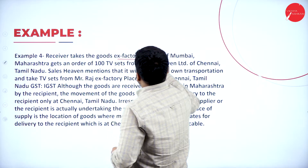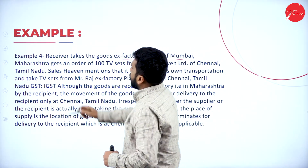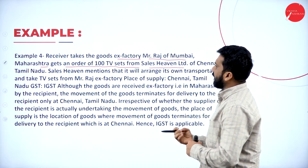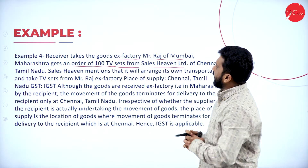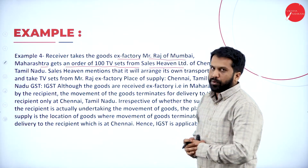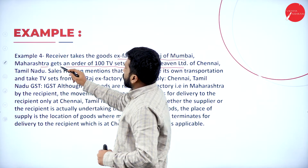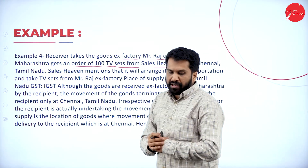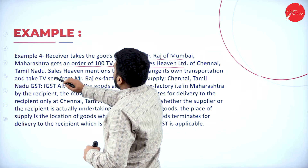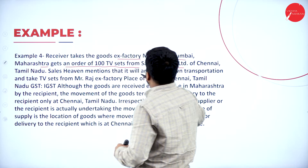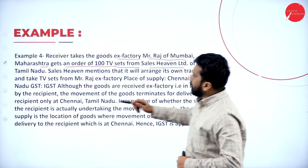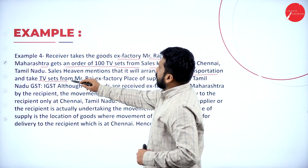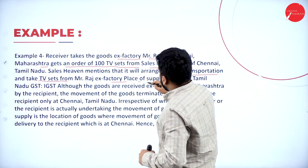Receiver takes the goods ex-factory. Mr. Raj of Mumbai, Maharashtra gets an order of 100 TV sets from Sales Heaven Limited of Chennai, Tamil Nadu. Sales Heaven mentioned it will arrange its own transportation and take the TV sets. Sales Heaven Limited is buying this — TV sets from Mr. Raj ex-factory. Place of supply: Chennai, Tamil Nadu.